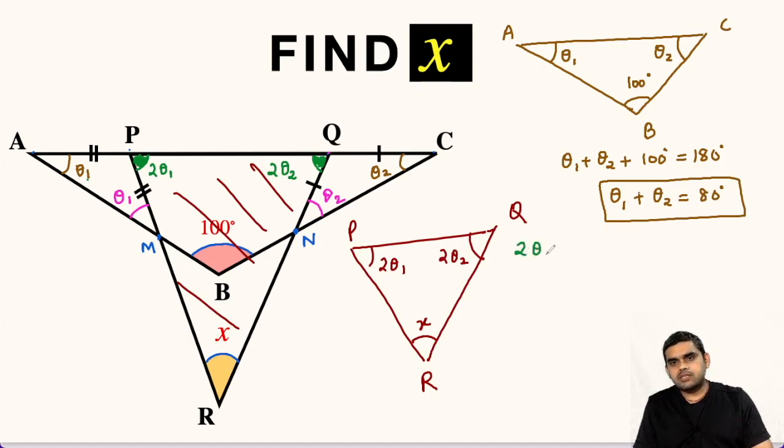So we get 2 theta 1 plus 2 theta 2 plus x equals 180 degrees. We can take 2 common. So 2 times (theta 1 plus theta 2) plus x equals 180 degrees.